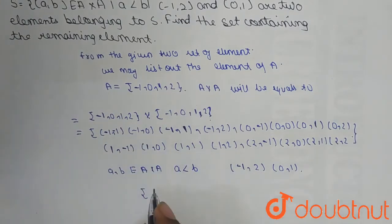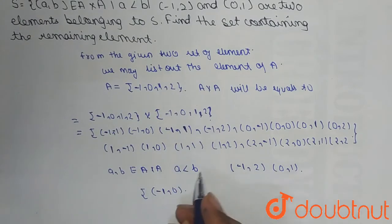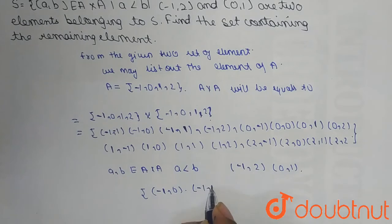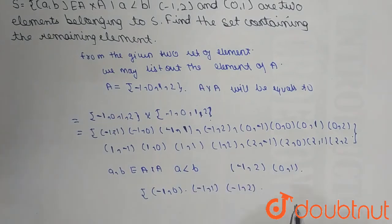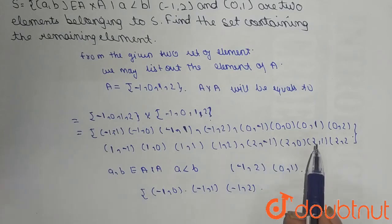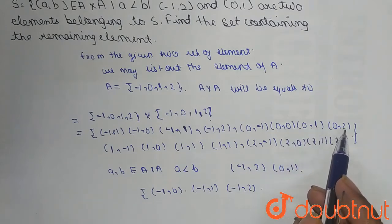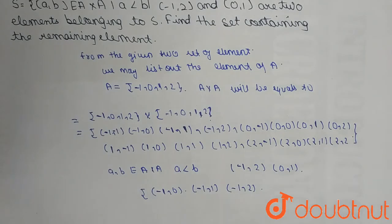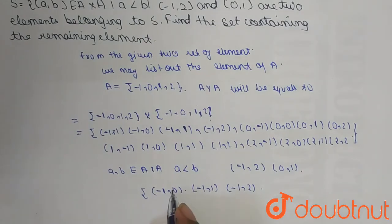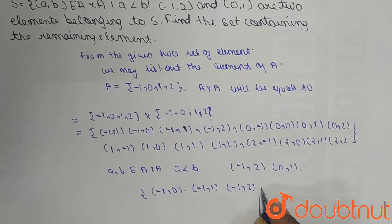So the elements will be (-1,0), (-1,1), and (-1,2). We will not take (0,-1) or (0,0). (0,1) works where 0 is less than 1, and (0,2) where 0 is less than 2. Similarly, (1,2). So the remaining elements are (-1,0), (-1,1), (0,2), and (1,2). Thank you friends, hope you like the video.